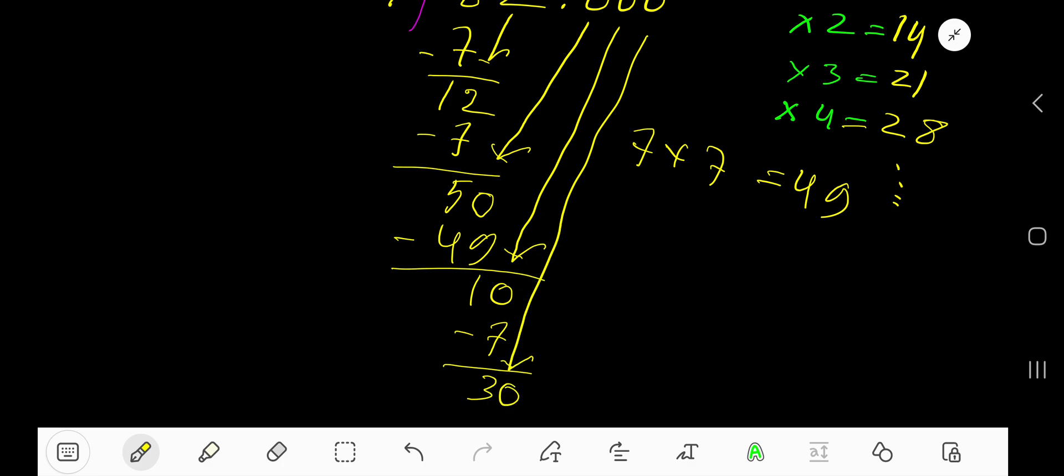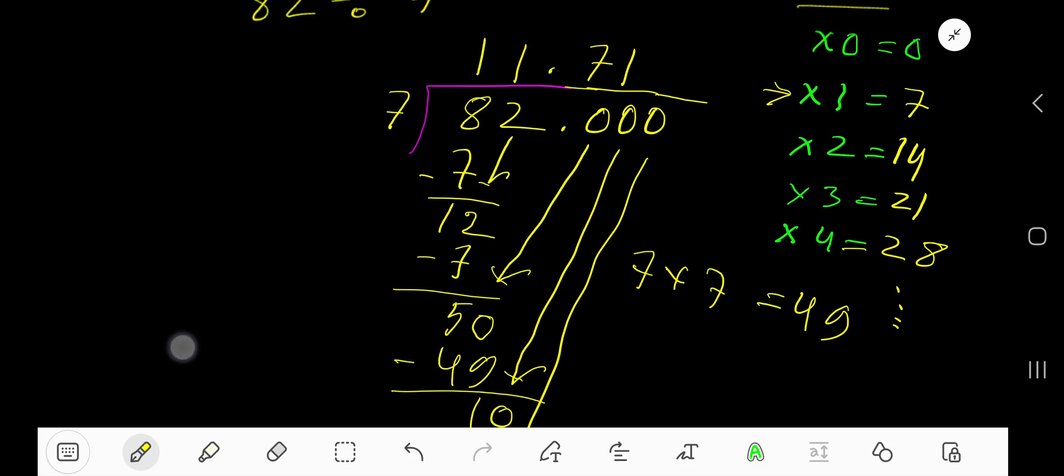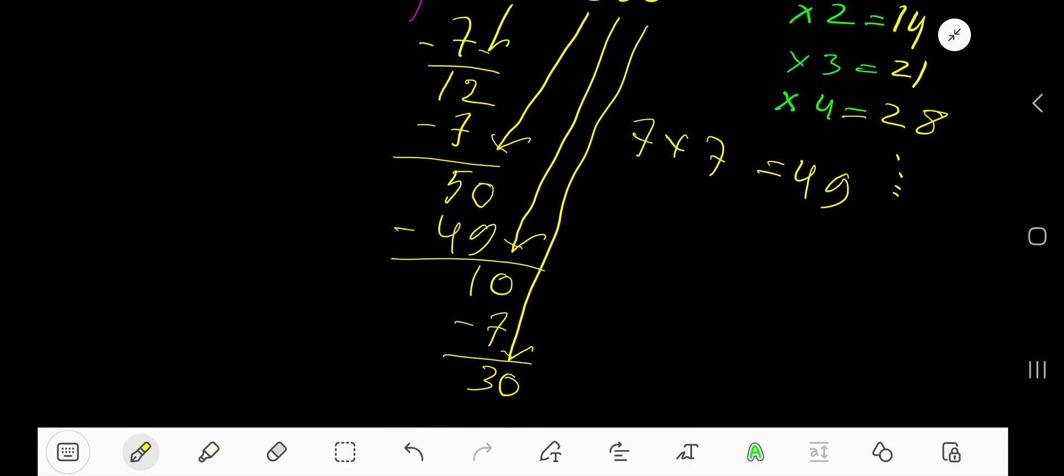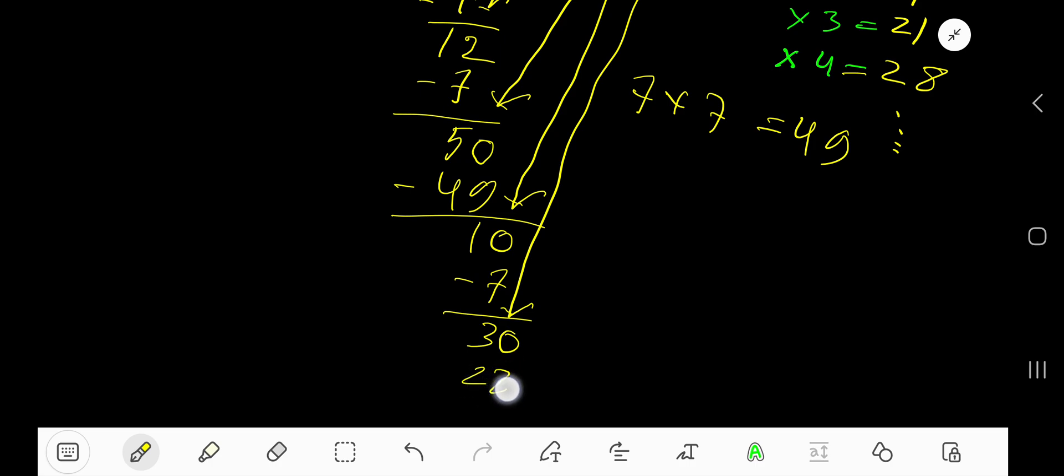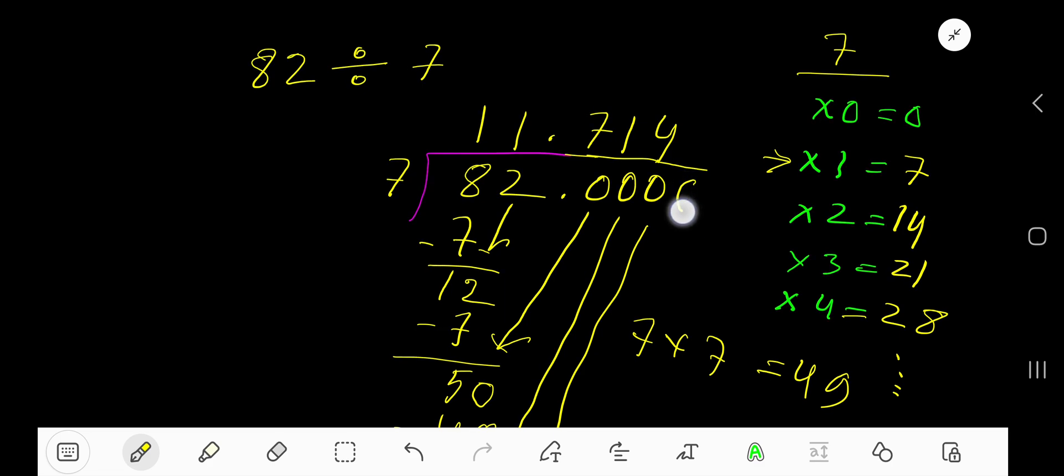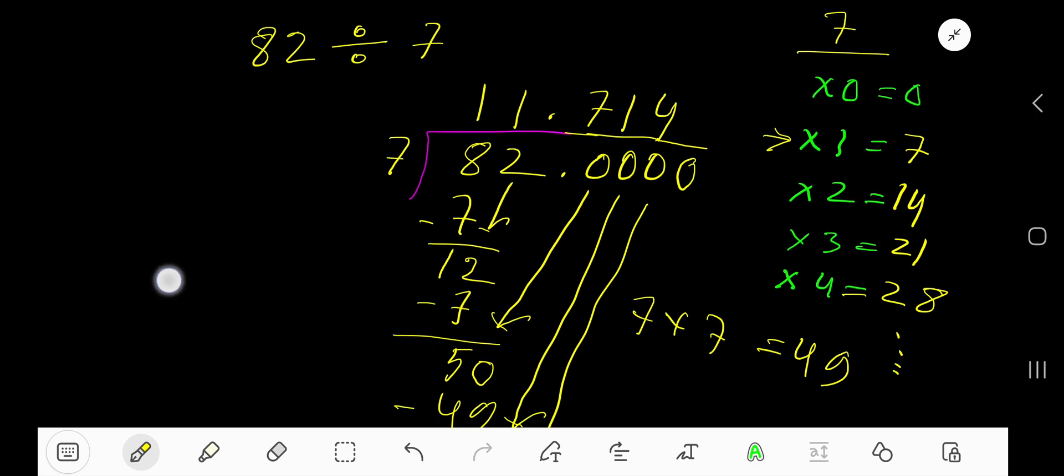So 30. 7 goes into 30 how many times? 7 times 4 is 28, which is closer to 30, so 4 times. 4 times 7 is 28. If you subtract, then you are getting 2.